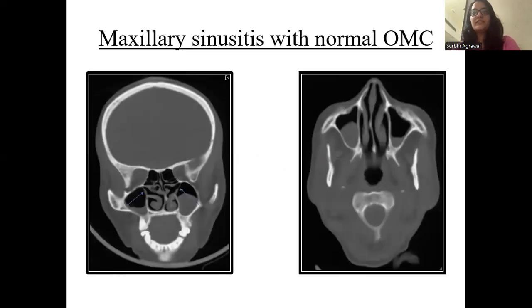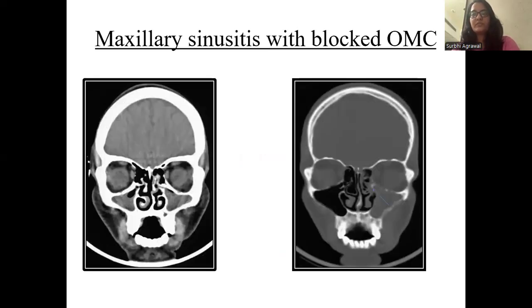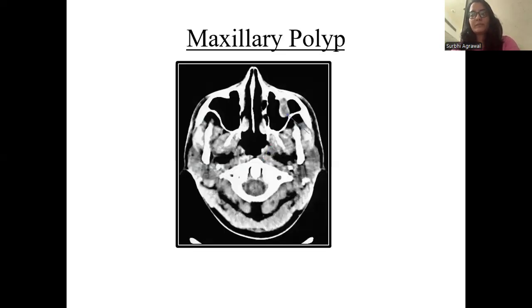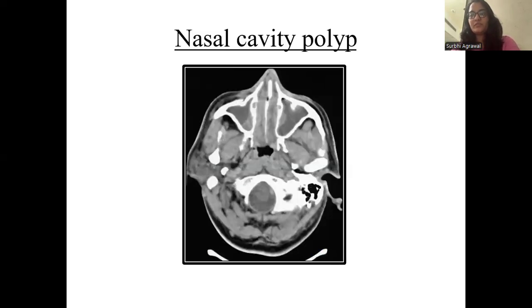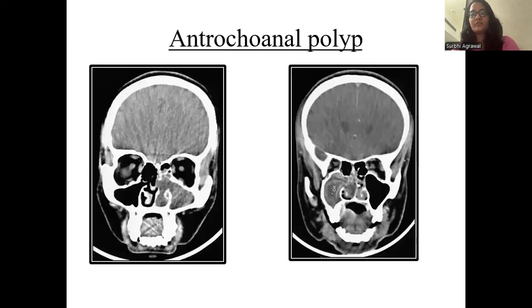These are the different cases. This is a case of maxillary sinusitis with normal OMC. This is another case of maxillary sinusitis with blocked osteomeatal complex. This is a case of maxillary polyp. A nasal cavity polyp is depicted in this picture. Here, an antrochoanal polyp can be seen.